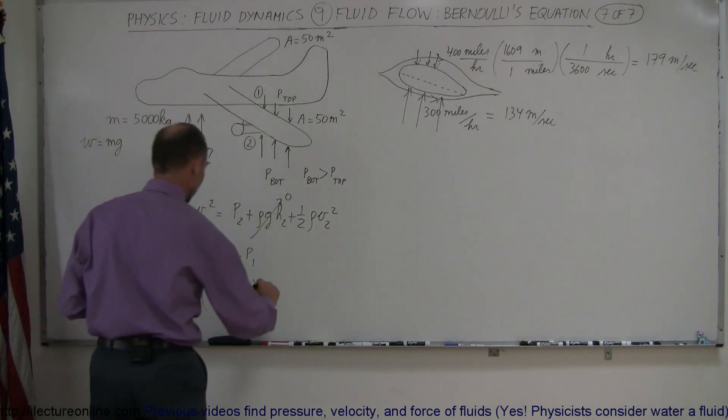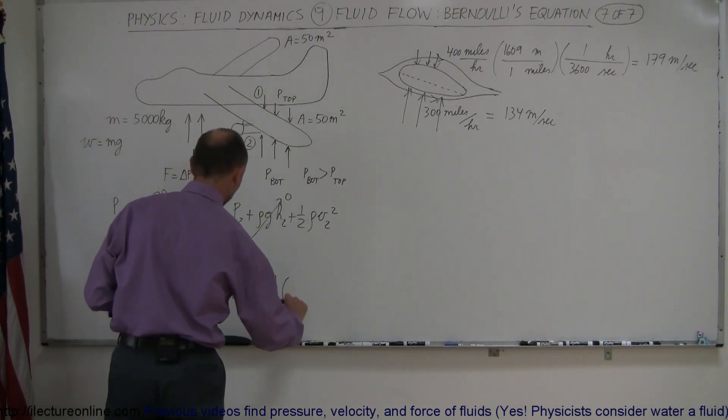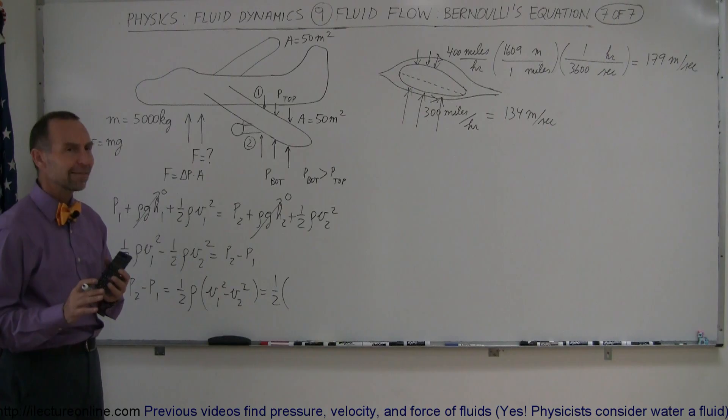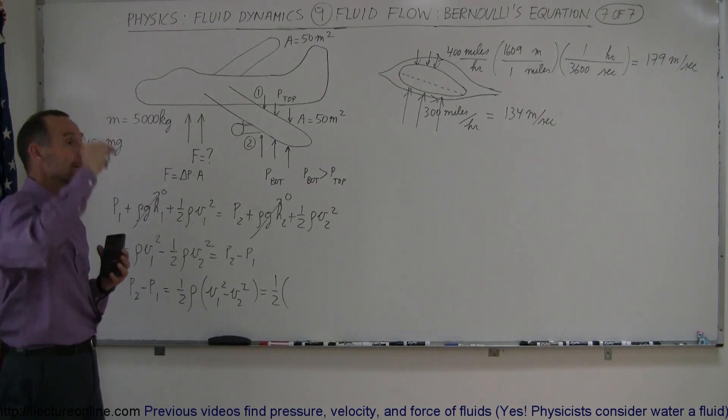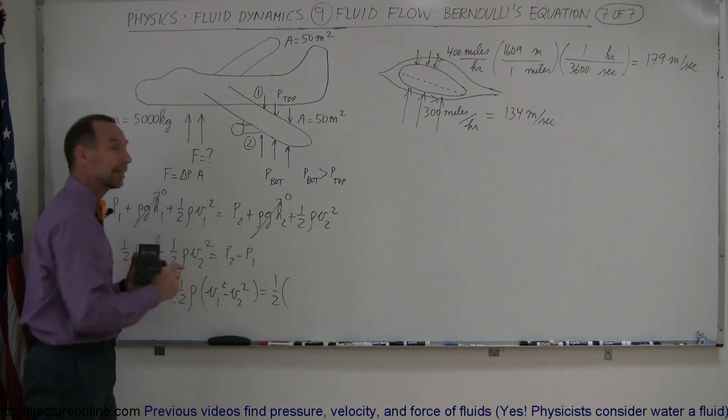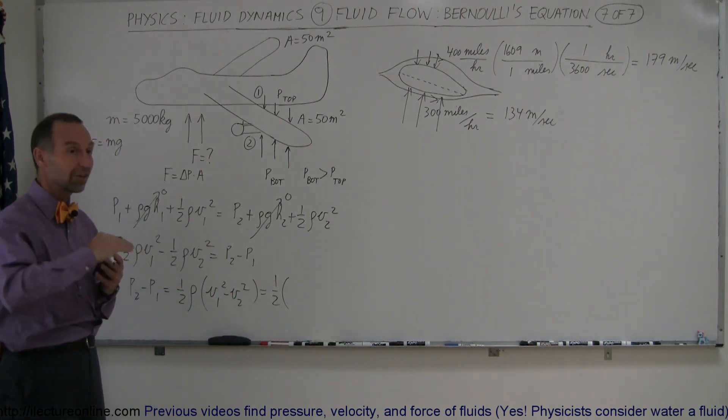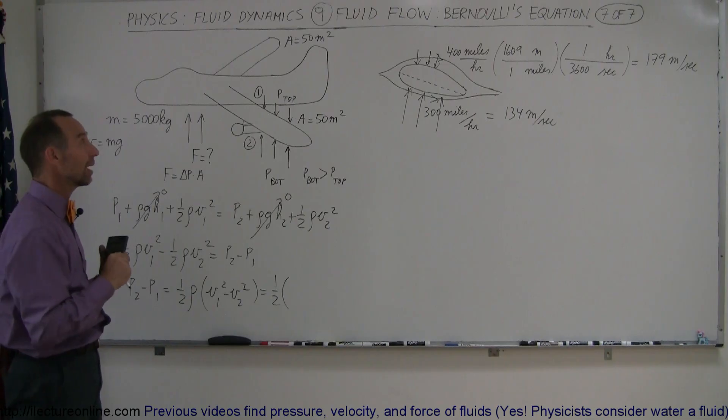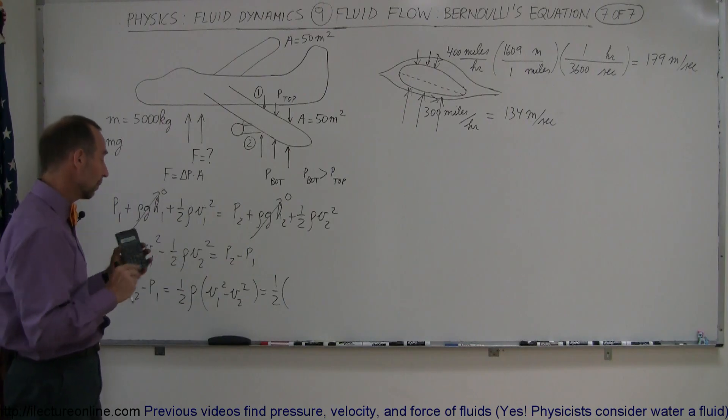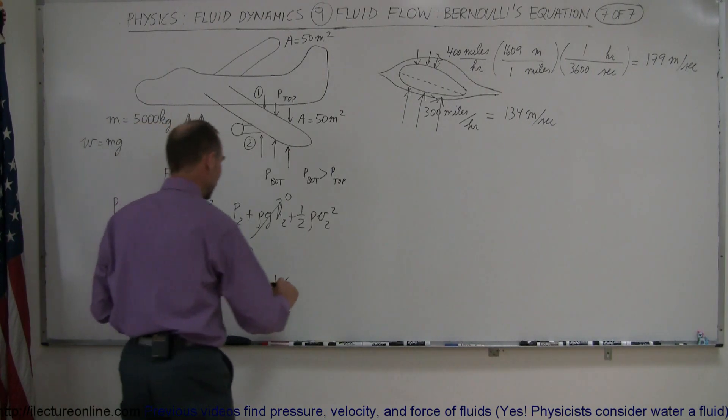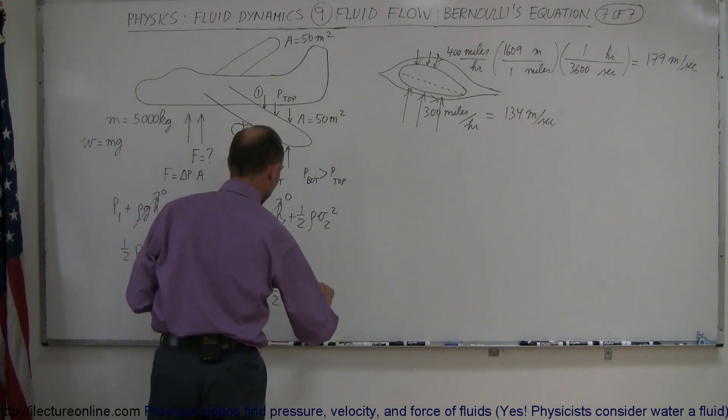Alright, plug in the numbers, this is equal to 1 half times the density. Now, let's take the density at sea level, and then of course, you can imagine as the plane goes higher and higher, and the density gets smaller, that also means that the pressure difference will get smaller. So, there is a limit as to how high planes can fly before the air gets so thin that the difference in pressure is no longer sufficient to keep the plane in the air. So, let's just simply call the density here at sea level. That would be 1.29 kilograms per cubic meter.